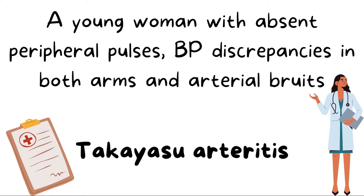A young woman with absent peripheral pulses, along with BP discrepancy between both upper arms, and the presence of arterial bruit in the carotid artery on auscultation, are highly suggestive of a diagnosis of Takayasu Arteritis.